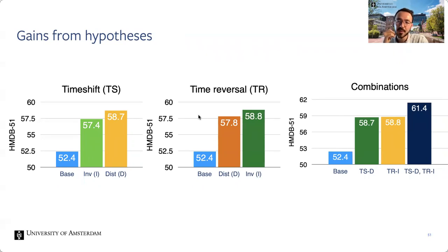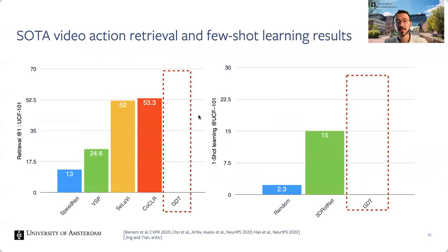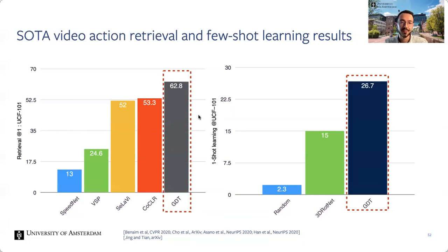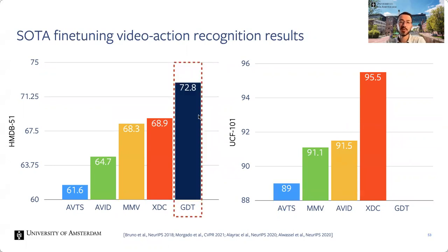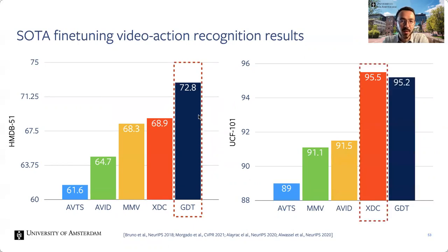With our framework we achieve state-of-the-art performance on both video action retrieval and few-shot classification, outperforming the state of the art by over seven percentage points recall at one on the UCF retrieval task. On UCF and HMDB action recognition, we set a new state of the art among audio-visual self-supervised methods. Notably, compared on HMDB, we even surpass supervised pre-training — and we tried hard to make the supervised baseline strong, so this was an apples-to-apples comparison.